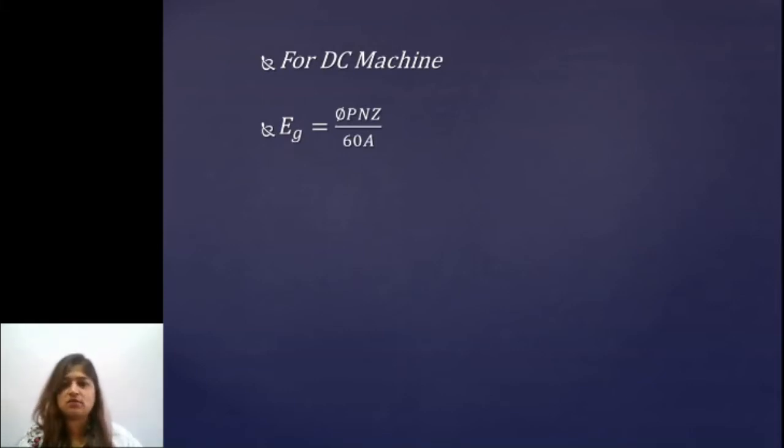Eg is the EMF induced in generator that is what we want to find out. Φ is the flux per pole, we will take the same value which we got in first part. P is the number of poles which is given. Speed you need to find out because frequency is given, so from frequency you can find the value of speed. Speed is given by 120 F by P. Then Z is total number of conductors. Now here you have to pay attention, it is not turns so 100 cancel. It is not per phase because when we talk about DC machine there is no single phase or three phase. Z is the total number of conductors which is 600. A in the problem itself it is clearly mentioned that it is a lap winding, so A will be equal to number of poles P.